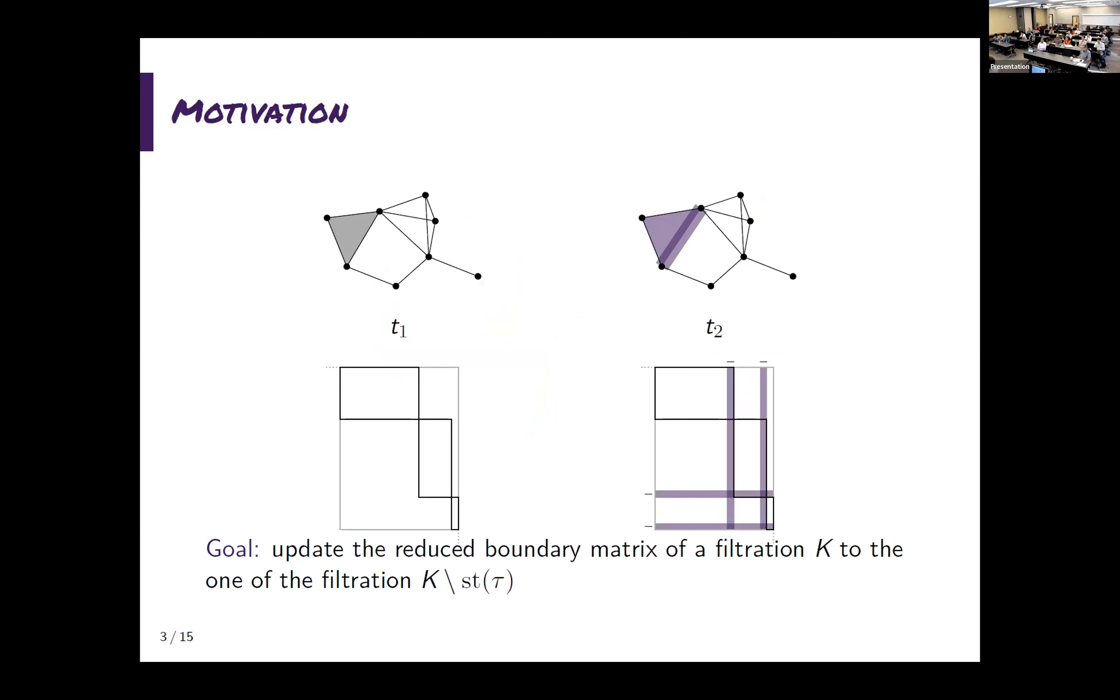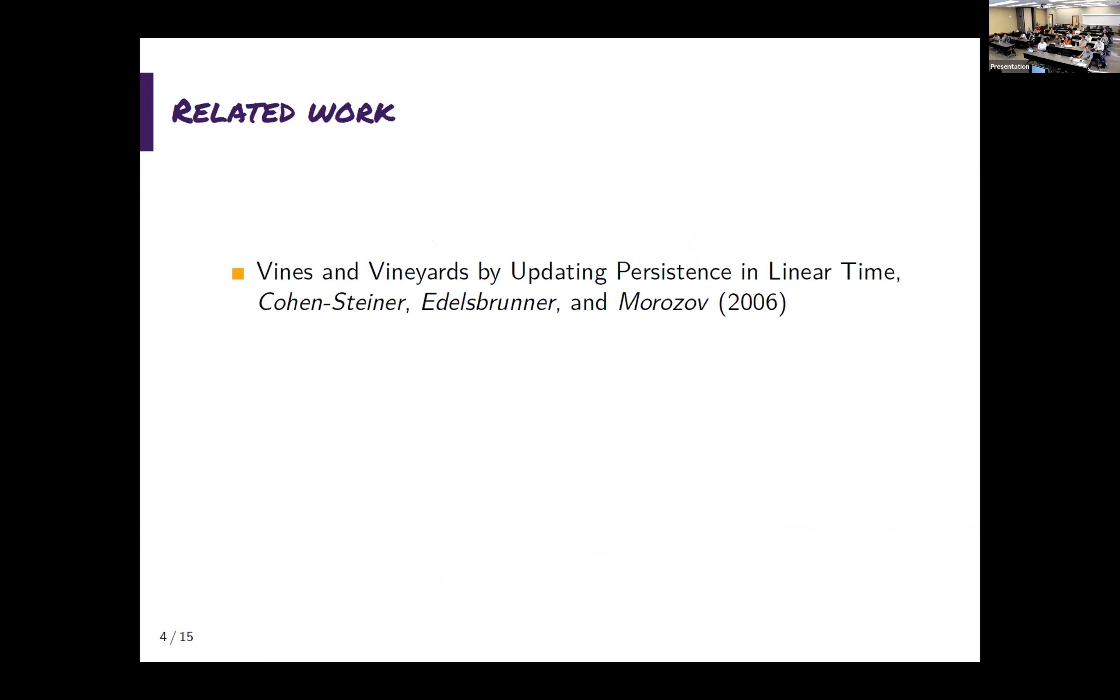So the idea is that I'm going to be given a filtration and a reduced matrix. And what I want to do is I want to say, okay, let's just remove one simplex and everything, all the cofaces, of course. And what I want to do is I want to find a quick way to just update the matrix by removing some columns. Of course, I cannot just remove some columns. I need to do some operations over it. So the star here is just the star of a simplex inside a filtration. You're not going to see the symbol again. It's just for being mathematically precise.